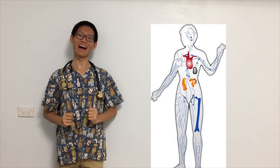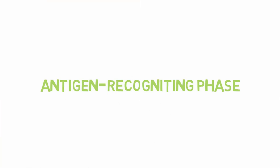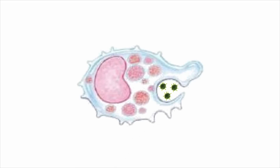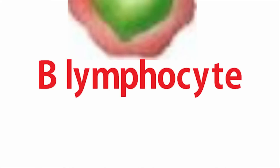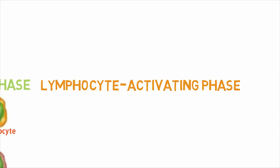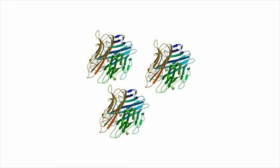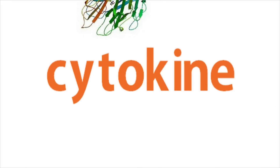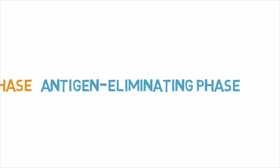The first stage of immune response is the antigen recognizing phase. Antigens are presented by macrophages or dendritic cells to T lymphocytes and B lymphocytes. The second stage is the lymphocyte activating phase. After T lymphocyte activation, cytotoxic T cells and cytokines are produced.